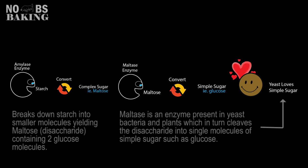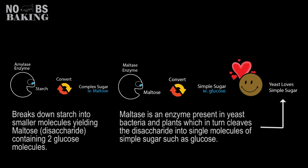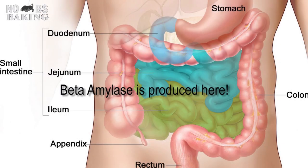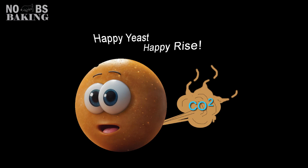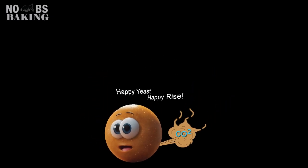Amylase breaks down starch into a disaccharide called maltose. From this point bacteria and yeast take over. They contain an enzyme called maltase, which further breaks down the two-molecule disaccharide into a simple saccharide, or more commonly referred to as a simple sugar. Yeast, like humans, need these sugars broken down to their lowest common denominator to absorb or feed on them properly. The faster yeast can metabolize the sugar, the more gas production — equaling a quicker, more profound rise in baked goods.